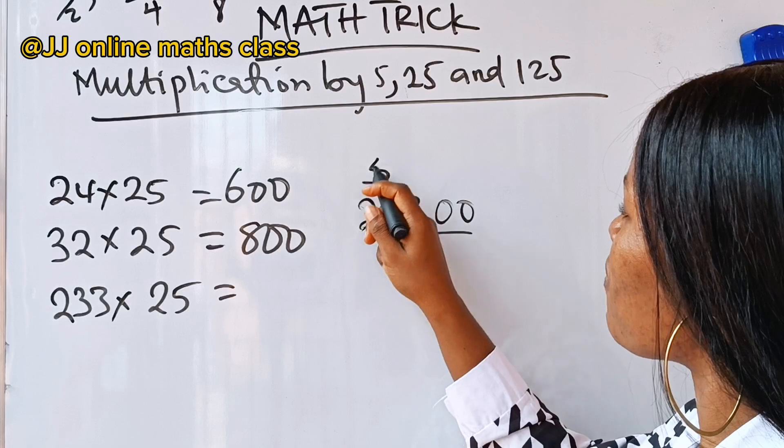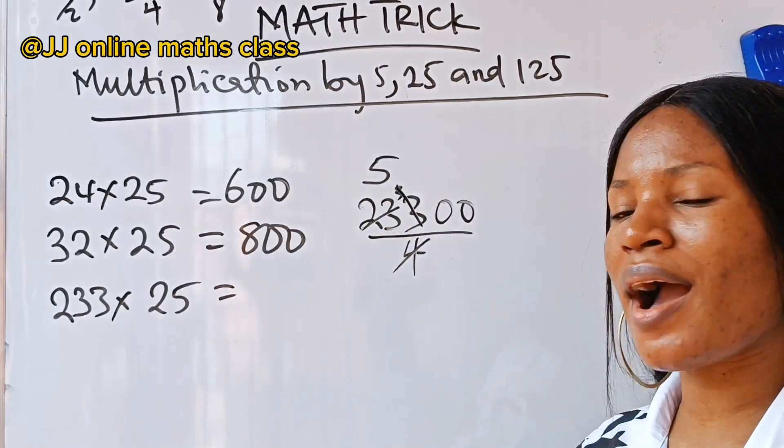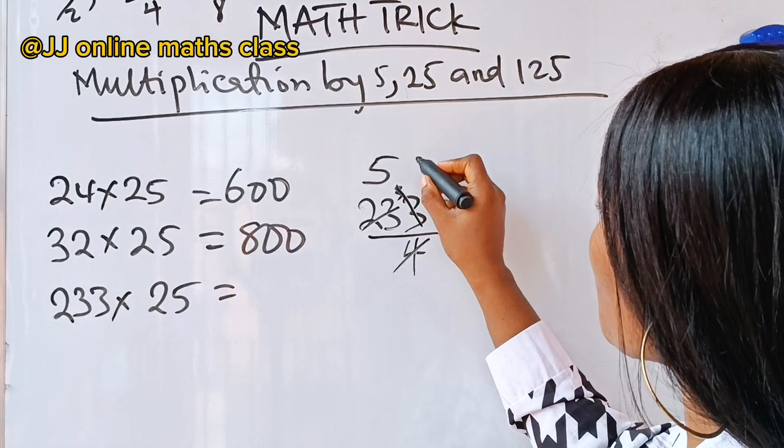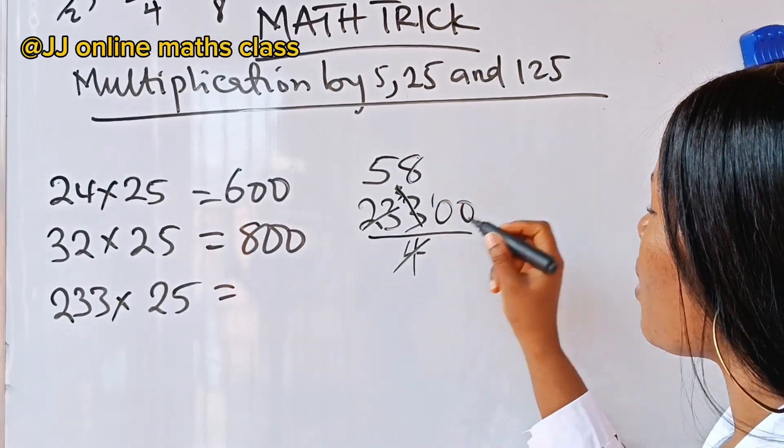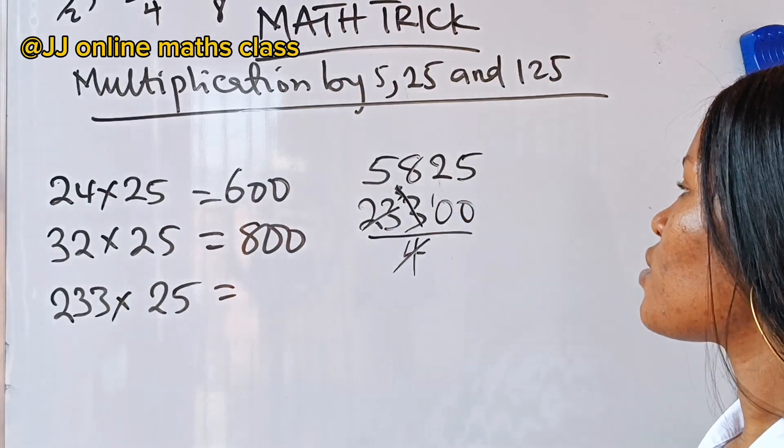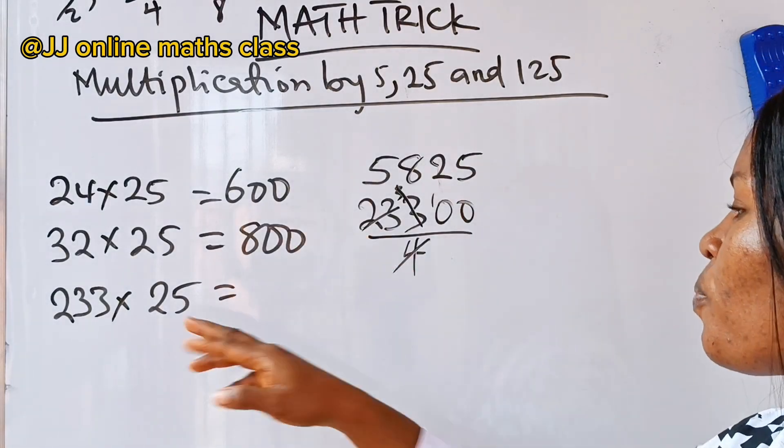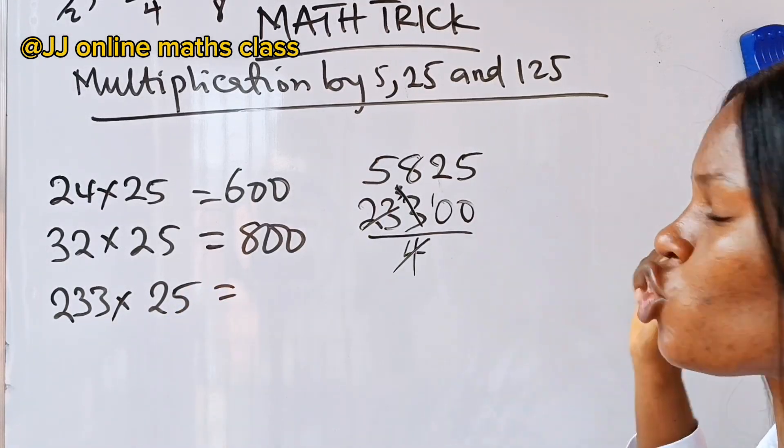Now, when 4 divides 23, we have 5 remainder 3. If we divide 33, we will have 8 remainder 1. If we divide 10, we have 2 remainder 2. If we divide 20, we have 5. So, it means that the solution to 233 multiplied by 25 is 5825.